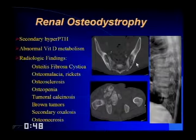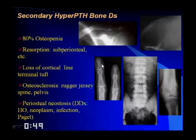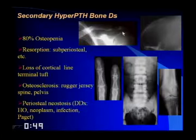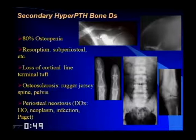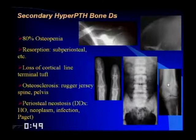In secondary hyperparathyroid bone disease, bone resorption occurs everywhere. Classic findings include subperiosteal bone resorption along the radial aspect of the second middle phalanx, subchondral resorption causing apparent widening of the AC joint, subligamentous resorption at the coracoclavicular ligament insertion, intracortical tunneling causing the salt-and-pepper skull, and periosteal neostosis with periosteal new bone formation — which can be mistaken for Paget's disease.